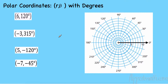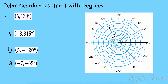Let's try it with degrees. For point E: 6 and 120 degrees. Go to 120 degrees and then out 6 — 1, 2, 3, 4, 5, 6. For point F: negative 3 and 315 degrees. Go to 315 and then count 3 away from that — 1, 2, 3. For point G: 5 and negative 120 degrees. Going backwards 120 gets me to 240 degrees, then out 5 — 1, 2, 3, 4, 5.